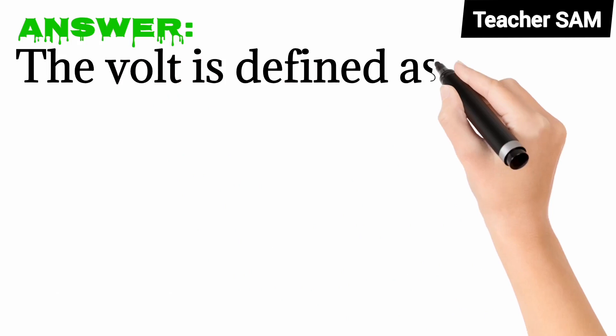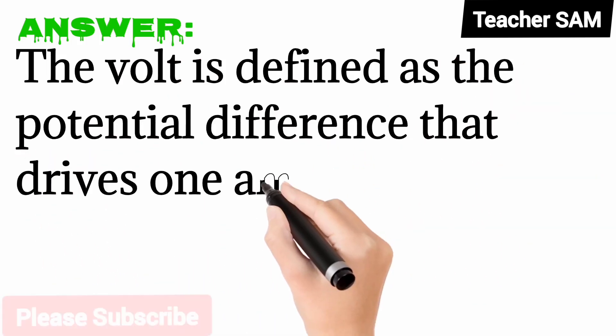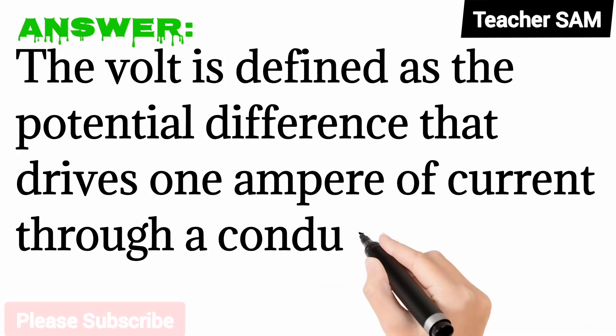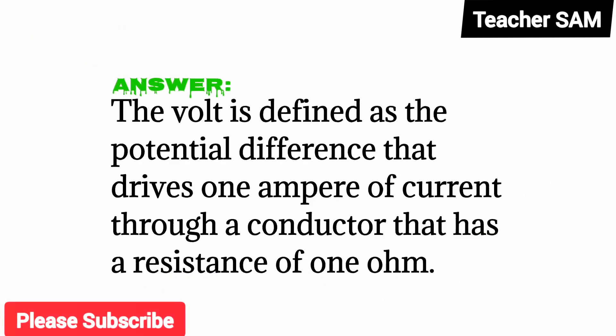The volt is defined as the potential difference that drives one ampere of current through a conductor that has a resistance of one ohm. Or: